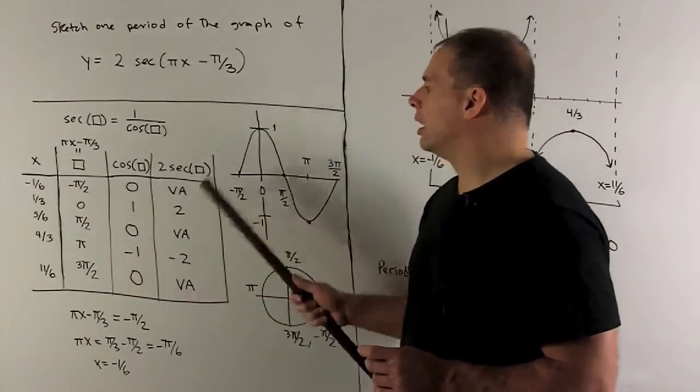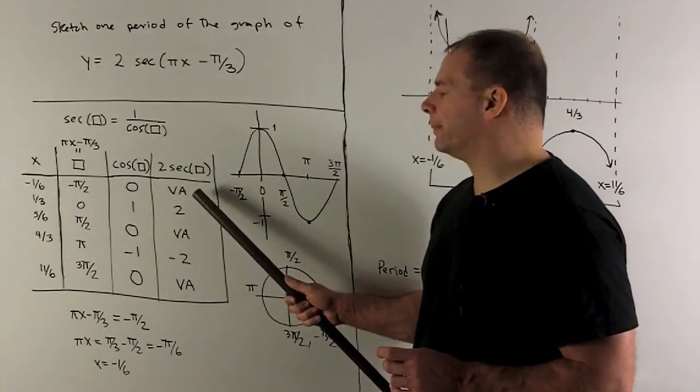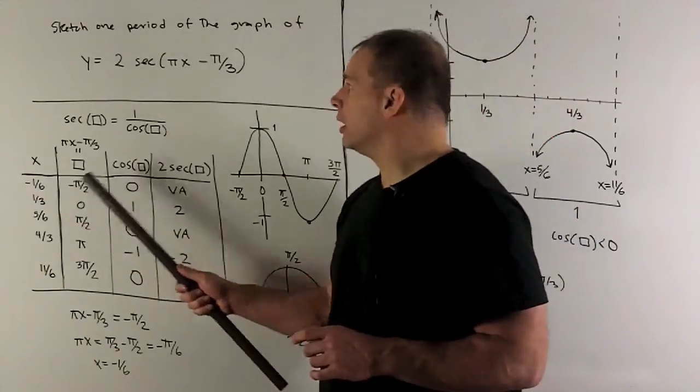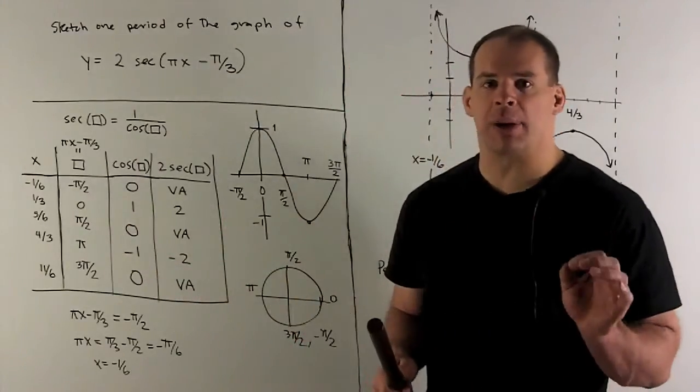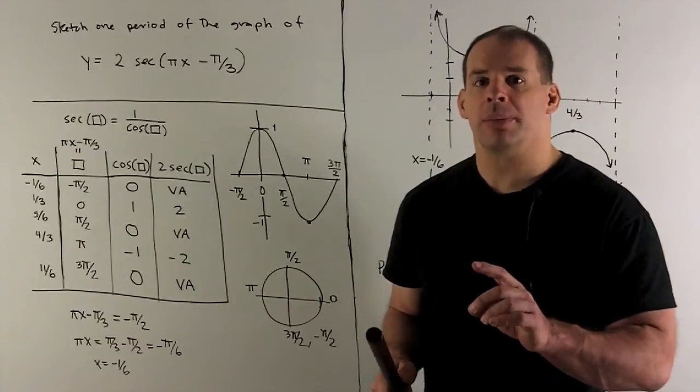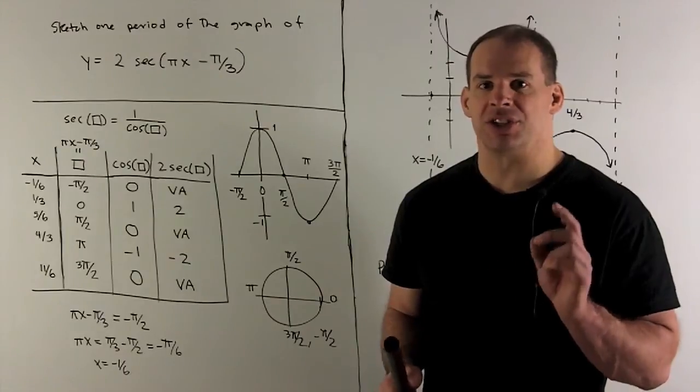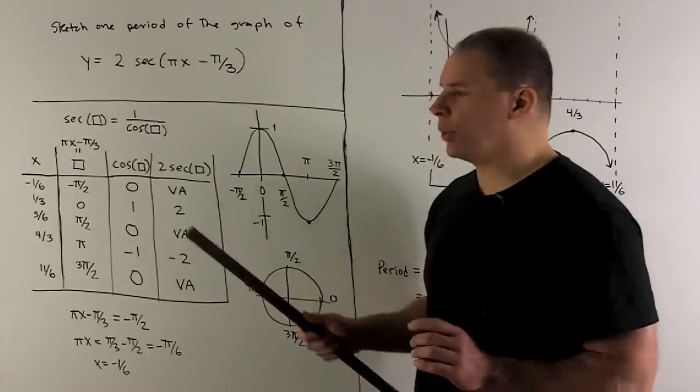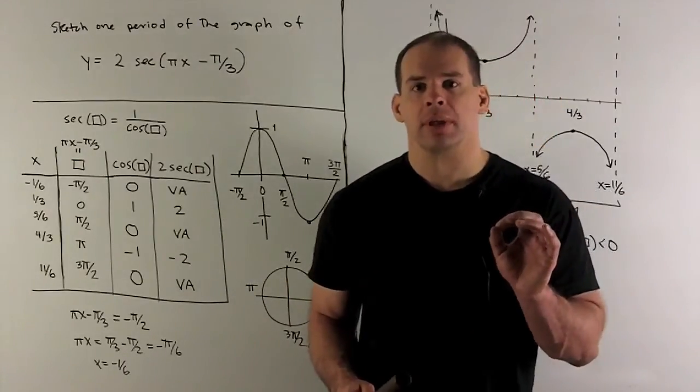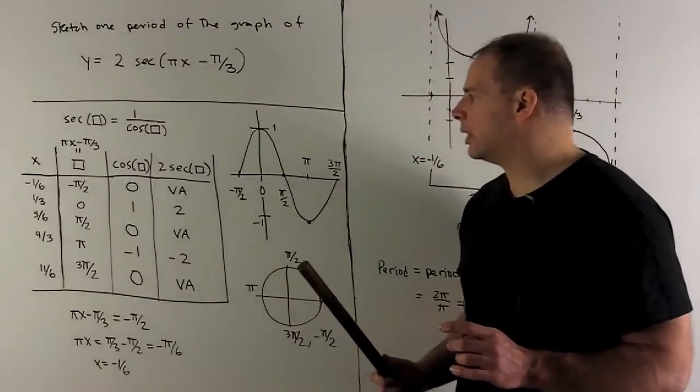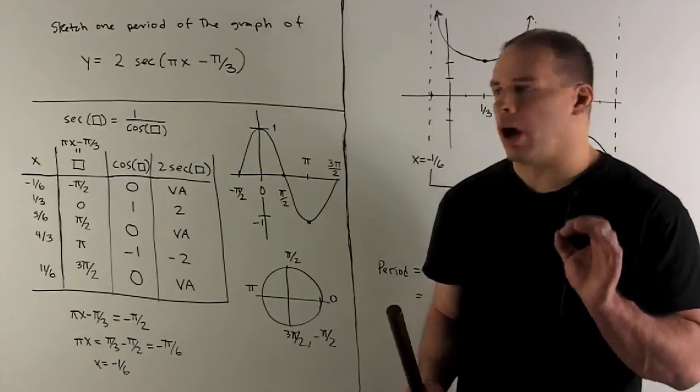Let's check: at 1/3, I take 1/3 and put it in here. We have π/3 - π/3 = 0. Sec(0) is 1/cos(0) = 1, so we're just going to get a 2 out. My check works. That's going to work if you go through the other three also.